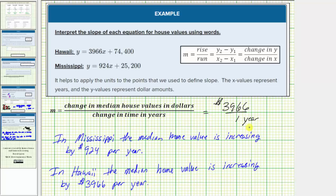We can also see from these two equations, the median home price is increasing faster in Hawaii than it is in Mississippi. I hope you found this helpful.